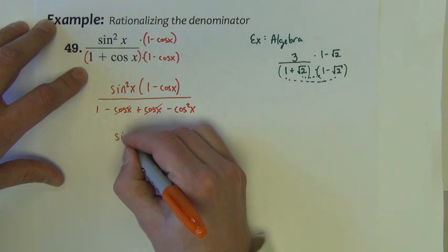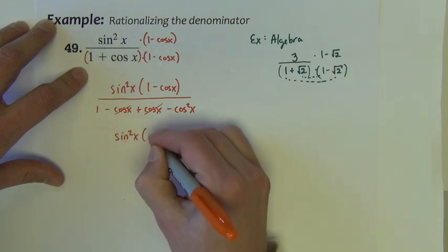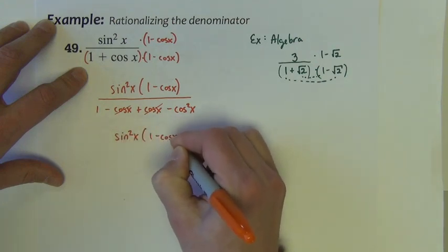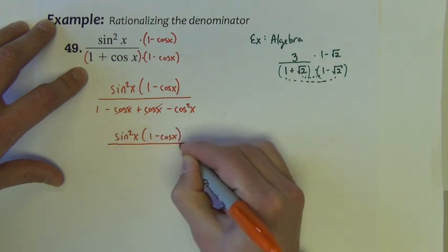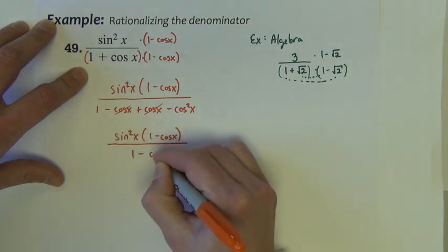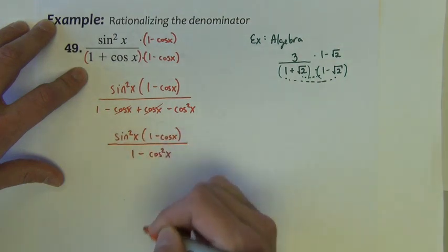The like terms make these cancel out. So I've got then sine squared x times 1 minus cosine in the numerator divided by 1 minus cosine squared in the denominator.